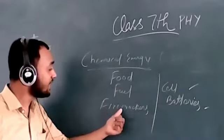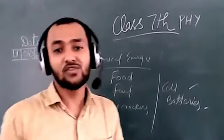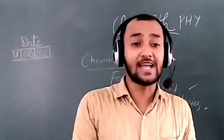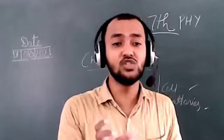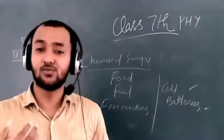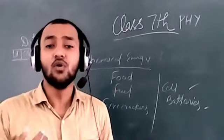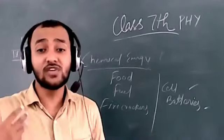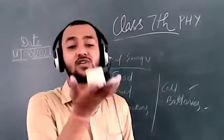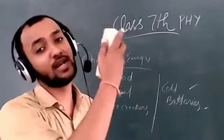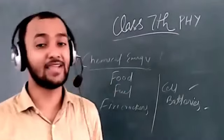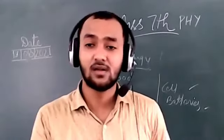Generally, chemical energy is converted into heat energy. When we consume food, digestion takes place and the chemical energy of food changes into heat energy. This heat energy is transmitted to our body and we can do various activities. Then this heat energy is converted into muscular energy — for example, when I lift this duster, I am using muscular energy, which comes from the digestion of food.